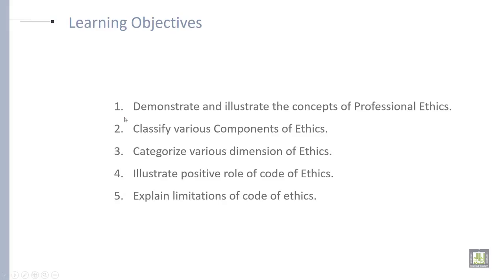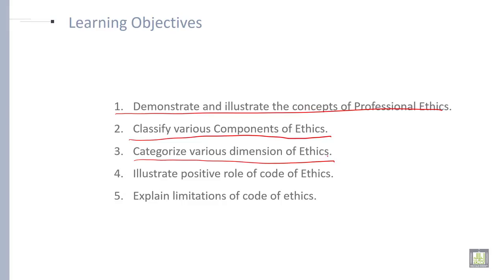This is the first learning objective. The second learning objective is to classify various components of ethics — what are the various components covered under ethics? The third learning objective is to categorize various dimensions of ethics, illustrate the positive role of code of ethics, and explain the limitations of code of ethics. So you have five learning objectives under this unit.